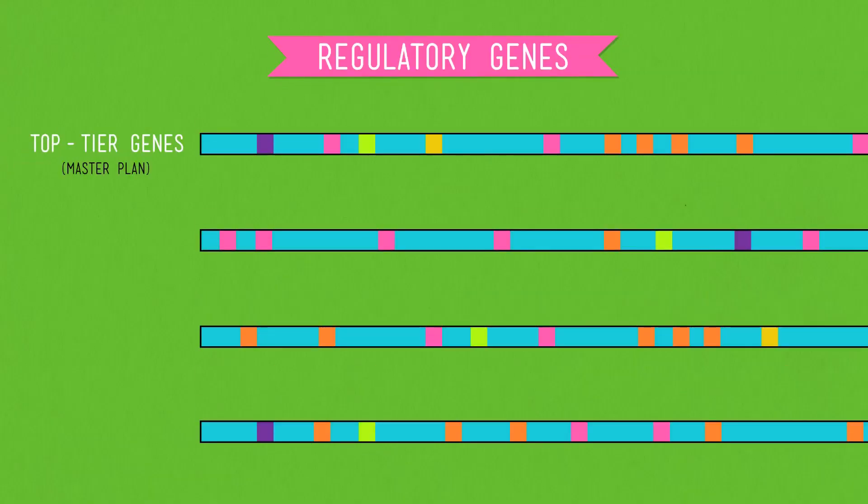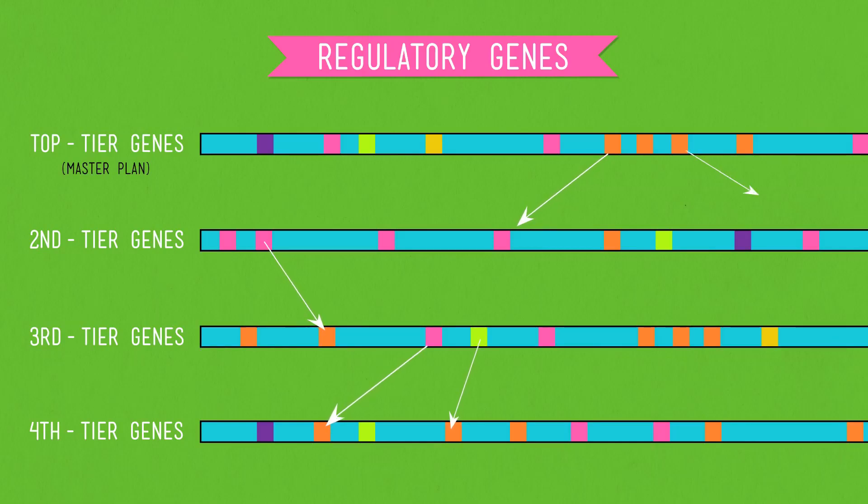Because under this top tier of regulatory genes, there are scads of other genes that act as subcontractors. Like, if a hox gene tells its direct subordinates, make an eye here, the subordinates then turn around, activate other regulatory genes to give more specific instructions, like, this is where we got to put the collagen for the outer shell of the eyeball, and make some nerve tissue for a retina right here.